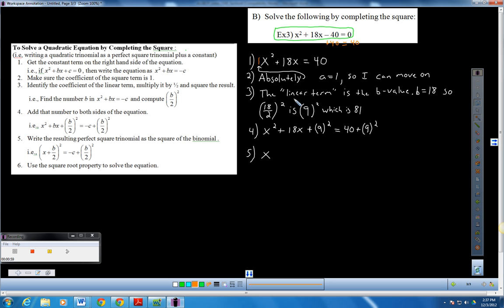And number 3, the linear term is that b value. With that b value, or the b value is 18. So I'm going to take half of 18 and square it. 18 divided by 2 and square it. I know that 18 divided by 2 gives me 9.